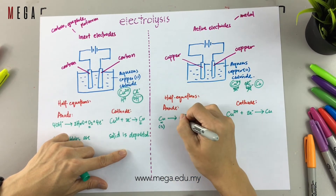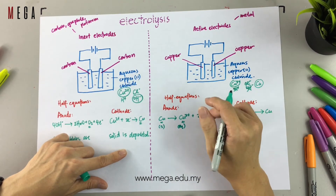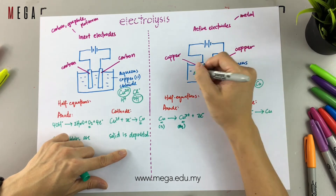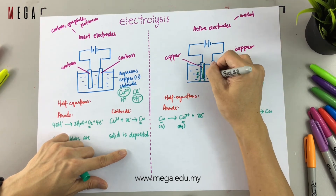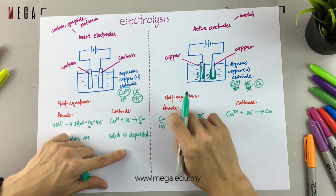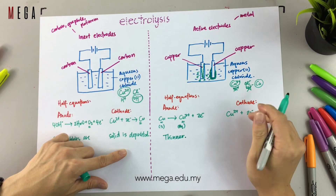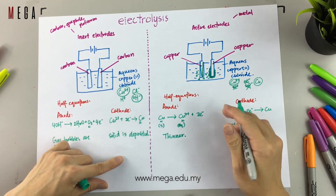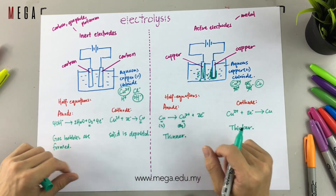The anode solid will decompose and become ions, so it becomes thinner. The metal itself recharges to form ions, and those ions travel to the cathode to form solid. Therefore, the observation is: the anode becomes thinner and the cathode becomes bigger. That's it!